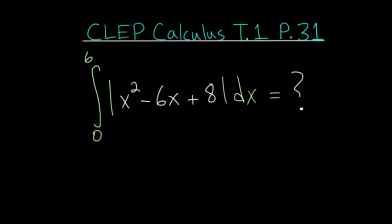For problem 31, we need to evaluate the definite integral from 0 to 6 of the absolute value of x squared minus 6x plus 8 dx.